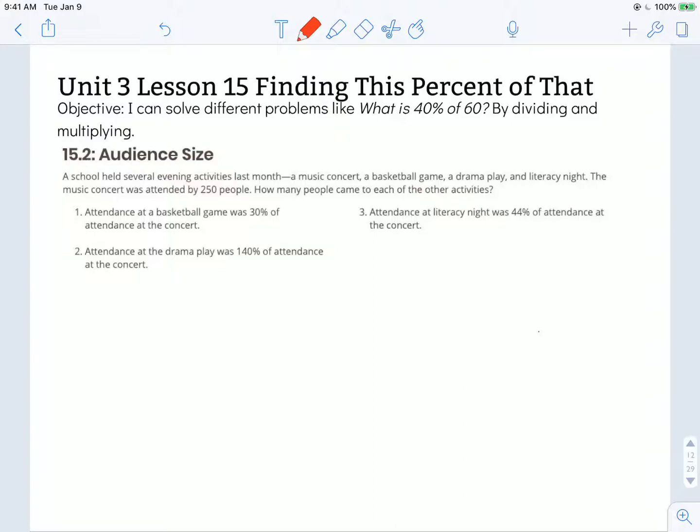The objective states I can solve different problems like what is 40% of 60 by dividing and multiplying. We're looking at activity 15.2, audience size. A school held several evening activities last month, a music concert, a basketball game, a drama play, and literacy night. The music concert was attended by 250 people. How many people came to each of the other activities? Number one, attendance at a basketball game was 30% of the attendance at the concert.